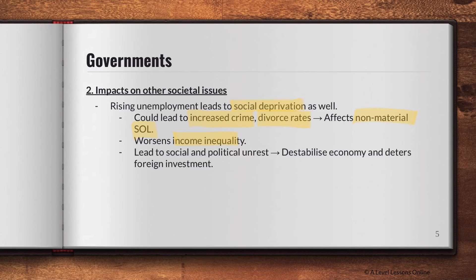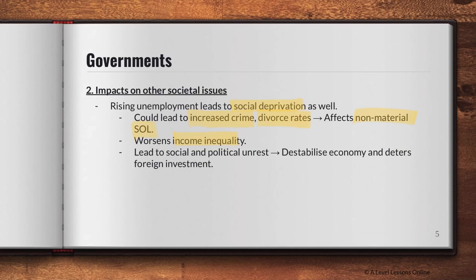Unemployment can also worsen income inequality. When unemployment happens on a massive scale, it tends to affect lower and middle income groups more, while the rich are less affected — the rich get richer while the poor without a job get poorer. This widens the income inequality gap, which is very detrimental to society. Singapore has a significant issue with income inequality, and it's very hard to resolve.